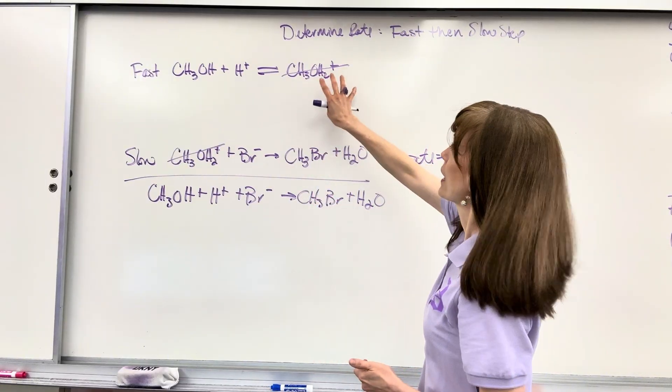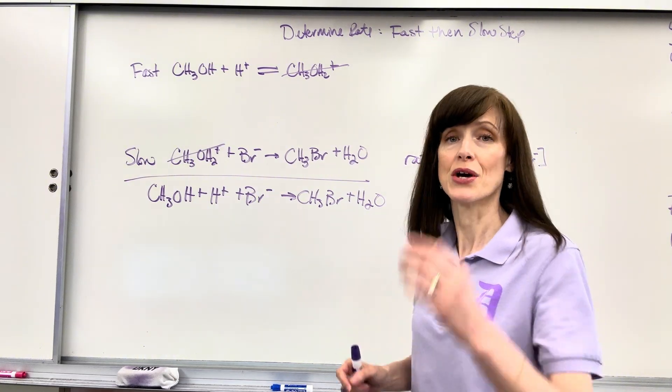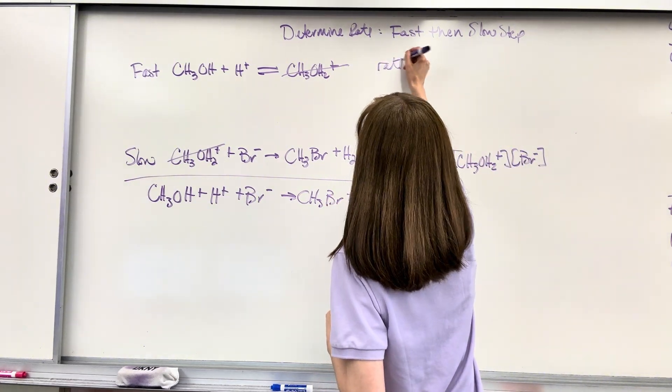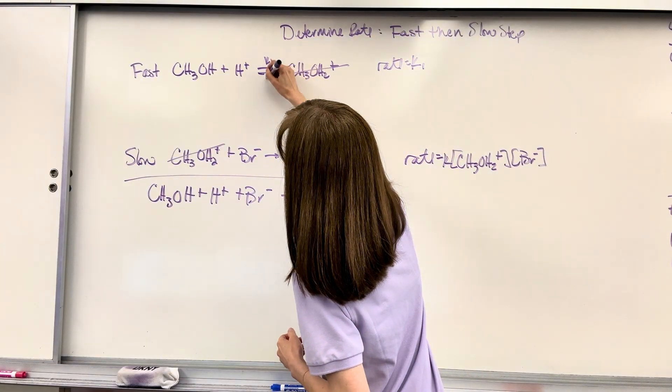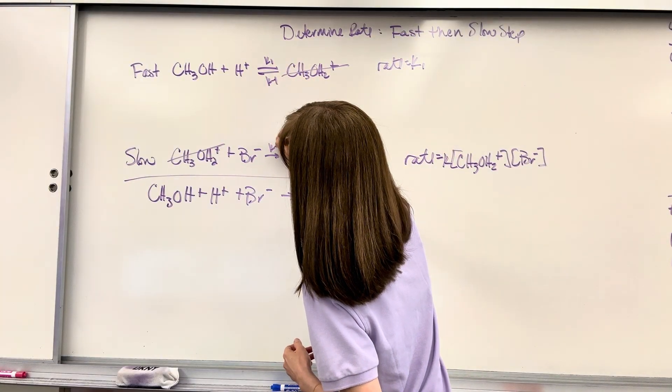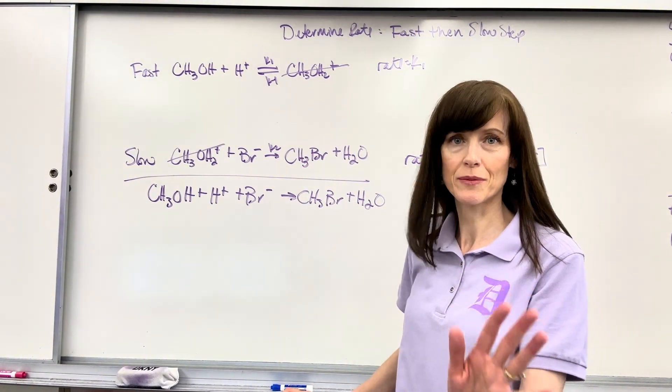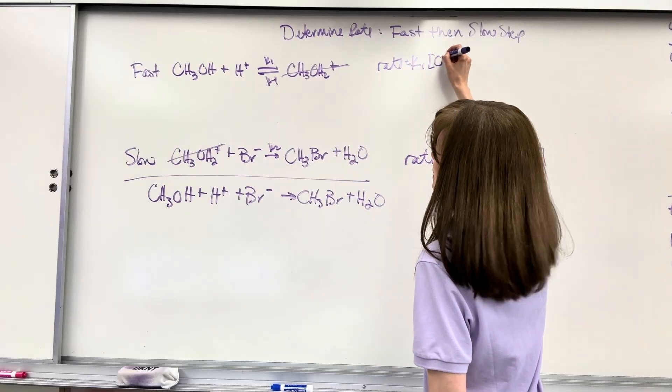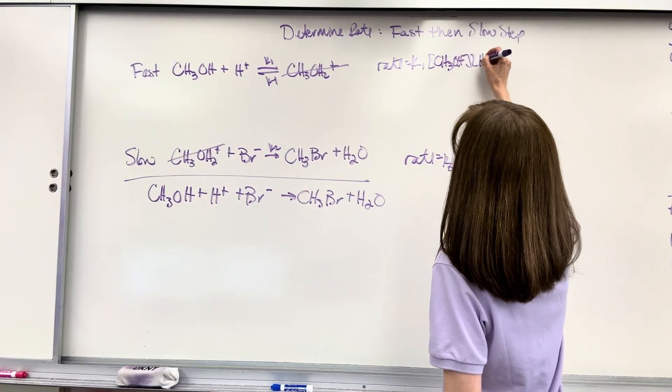So step three, I go to my fast step and I write both rate laws, forward and reverse. The forward rate law, rate equals—this would be K1, K minus one, I'm going to call that K2 just to keep these straight. They really don't matter but we'll keep them straight. We will have CH3OH times H+.